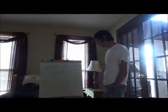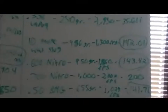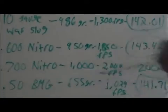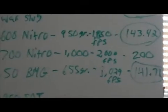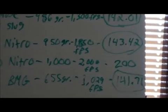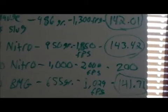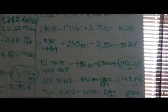Now a 700 Nitro has 200 TKO, and a 50 BMG, a 655 grain bullet going at 3,029 FPS, has a TKO of 141.71. So he's saying that a 10 gauge wax slug is more powerful than the 50 BMG. That's absolutely insane.